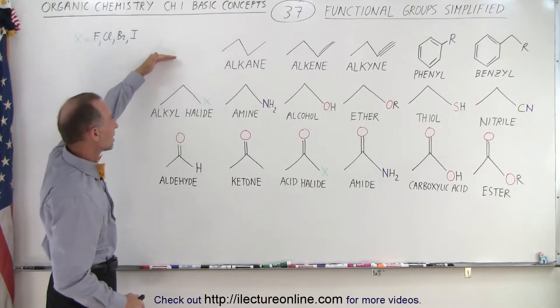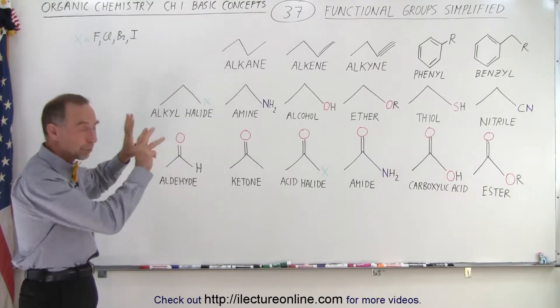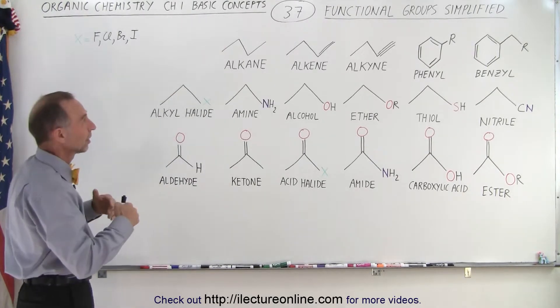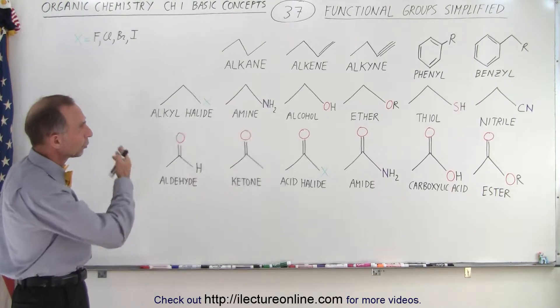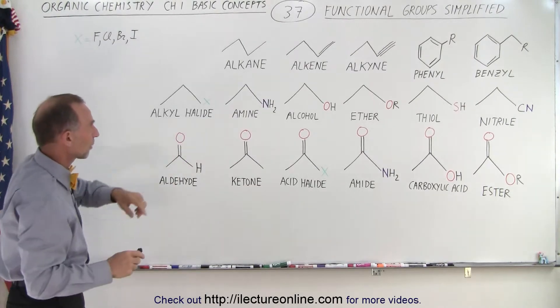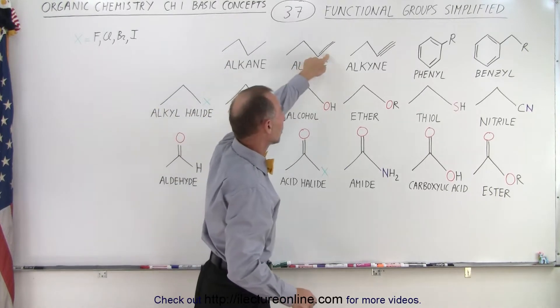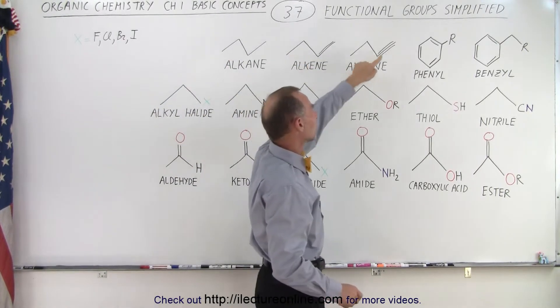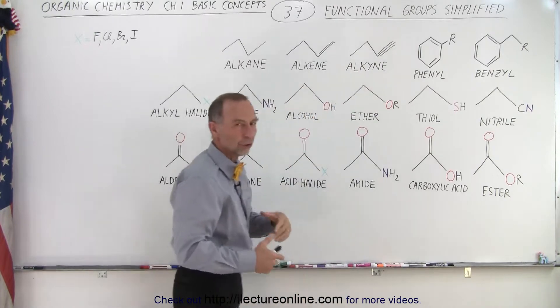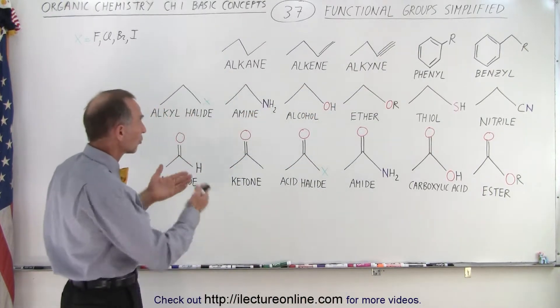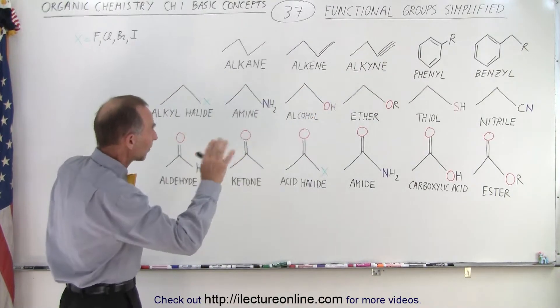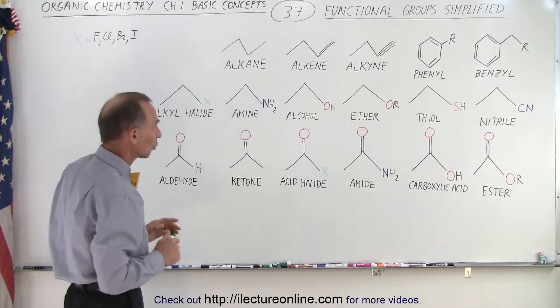Now notice we're going to have three main groups, but the top group, they're not functional groups. Essentially these are what we call the chains that we could possibly have. We can have alkanes with all single bonds, alkenes with at least one double bond, and alkynes with at least a triple bond. So those are the various kinds of organic molecules you can have with strings of carbon atoms and hydrogens attached to the corners.